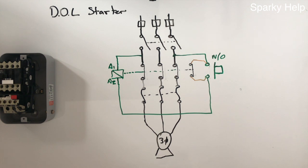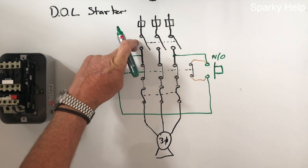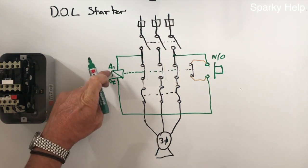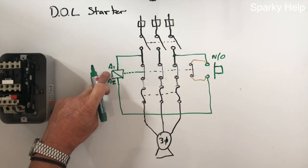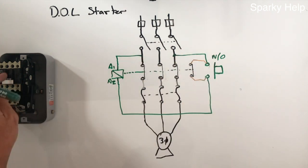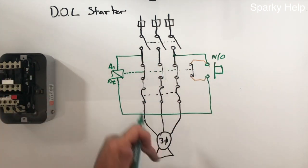And there we have it, it will continue to run. But how do we turn it off? Well we've got an isolator, if we turn the isolator off then power will drop out, this will be de-energised, all of these will spring back because these are sprung loaded and the motor will stop, but obviously that isn't very effective either so we need a stop button.